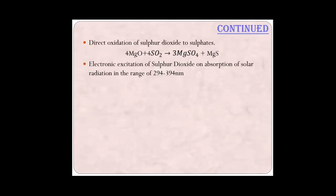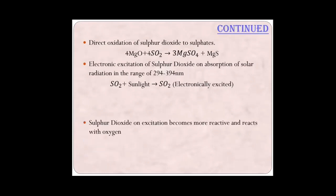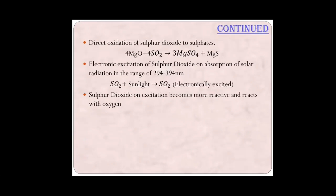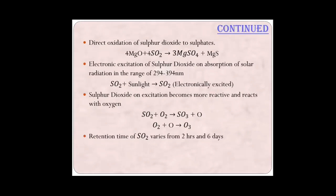We can also note the electronic excitation of sulfur dioxide, which takes place because of the absorption of solar radiations in the wavelength region of around 294 to 394 nanometers. SO2 absorbs UV rays from sunlight and as a result is electronically excited. Sulfur dioxide on excitation becomes more reactive and reacts with oxygen to give sulfur trioxide and nascent oxygen. The atomic nascent oxygen is also quite reactive and combines with molecular oxygen, resulting in the formation of ozone. The retention time — how long sulfur dioxide is retained in the atmosphere — varies depending on the source and concentration, ranging from around two hours to six days.